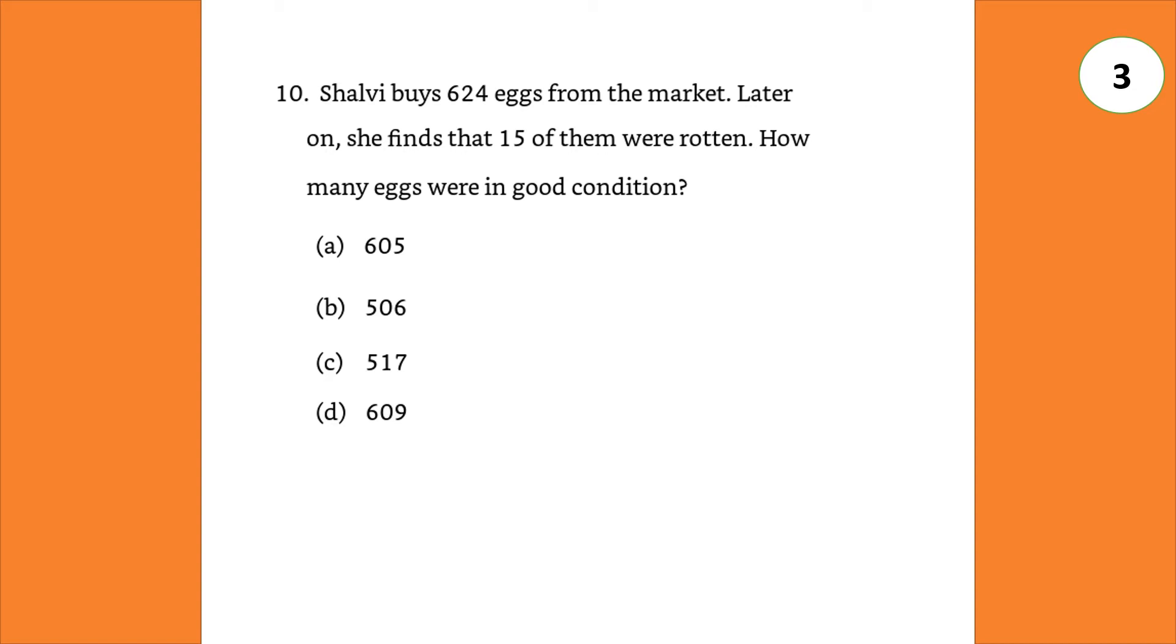Shalvi buys 624 eggs from the market. Later on, she finds that 15 of them were rotten. How many eggs were in good condition? Answer 609.